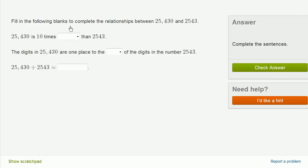Fill in the following blanks to complete the relationships between 25,430 and 25,443. All right. So 25,430 is 10 times larger than 2,543. Literally, you take this, you multiply it by 10, you're going to get 25,430.